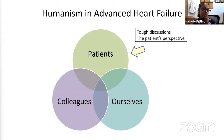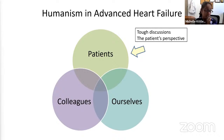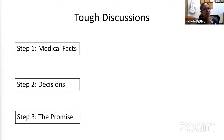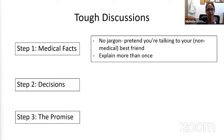What do I want to tell you about humanism when it comes to patients with advanced heart failure? I want to talk about tough discussions — how do you have those difficult discussions with patients? And how do we see things from the patient's perspective? I have a stepwise approach to pretty much everything in medicine. The system I have devised for tough discussions is: step one, share the medical facts; step two, explicitly explain the decisions patients will have to make; and step three, end every tough discussion with a promise.